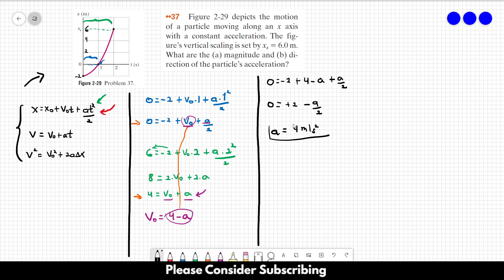The magnitude of the acceleration is 4 meters per square second. Since we want the magnitude, it's just the positive value, but it is already positive. And the direction is in the positive direction, since it is plus 4 meters per square second.